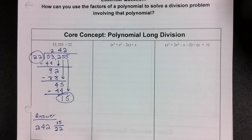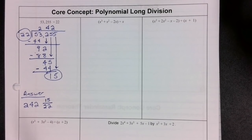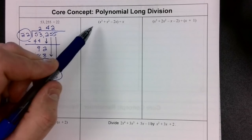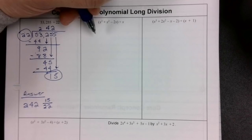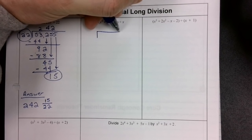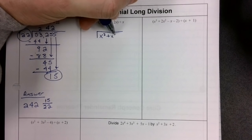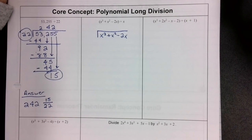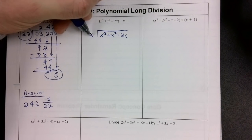Now let's apply those principles to a polynomial. So we have x to the third plus x squared minus 2x. The set up is going to be the same: x to the third plus x squared minus 2x goes underneath, and then we put the x on the outside.